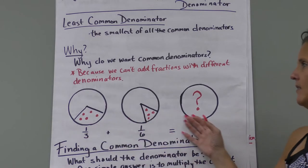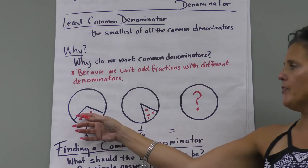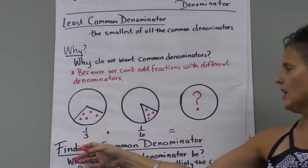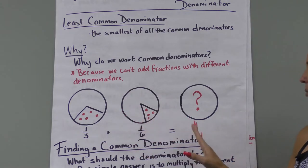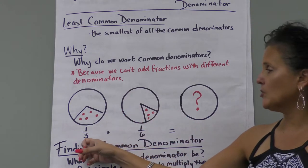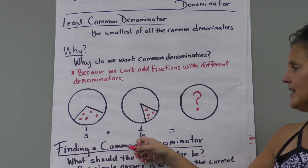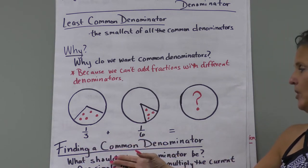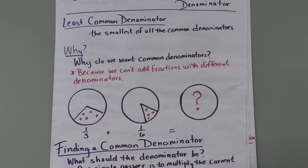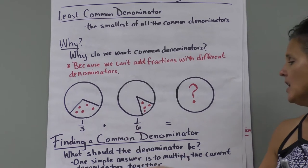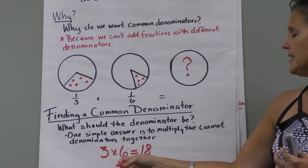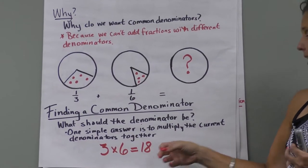If we're looking at our pizzas in this instance, we have one-third of a pizza here, and we want to add one-sixth of this pizza here, and we'll see what our answer would be. We can't add these because we have a three and a six. So let's find the least common denominator. One easy way is to multiply the two denominators together — three times six gives us 18.